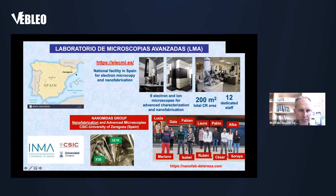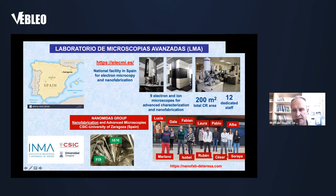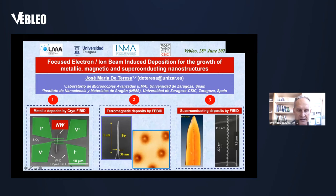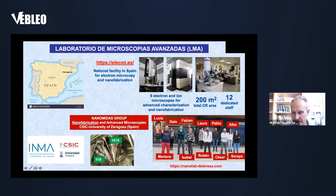Let me introduce our lab. We are in Zaragoza, in the north of Spain. Our facility is a national facility in Spain for electron and ion microscopies, with nine electron and ion microscopes for advanced characterization and nanofabrication, a clean room of 200 square meters, and 12 dedicated technicians. My group is called the NanoMidas group — nanofabrication and advanced microscopies — part of the Instituto de Nanociencia y Materiales de Aragón, a joint institute of CSIC and Universidad de Zaragoza.